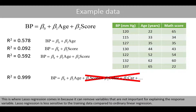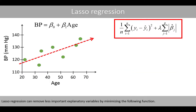This is where LASSO regression comes in, because it can remove variables that are not important for explaining the response variable. LASSO regression is less sensitive to the training data compared to ordinary linear regression. LASSO regression can remove less important explanatory variables by minimizing the following function.